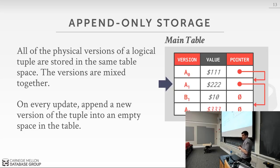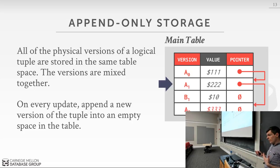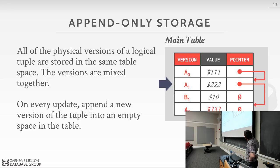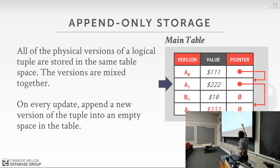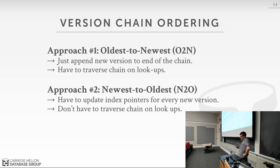Postgres uses append-only storage. There's a well-known blog post from Uber about why they switched from Postgres to MySQL and back — it comes down to one doing oldest-to-newest and the other doing newest-to-oldest. In Postgres, which does newest-to-oldest, every update requires going and updating all the indexes, which is expensive — especially if you have many secondary indexes.